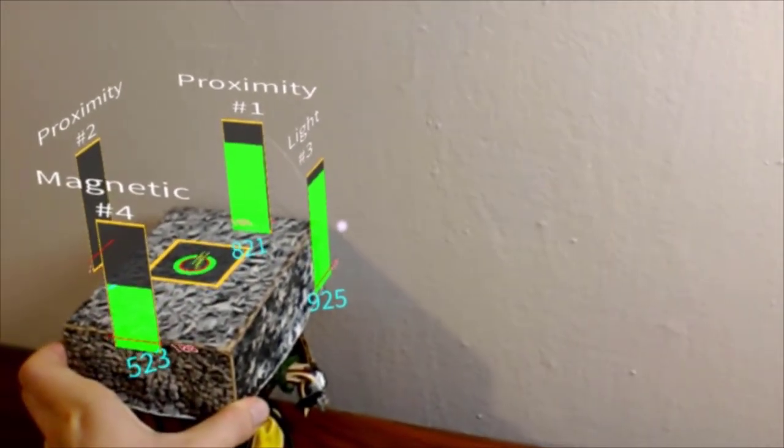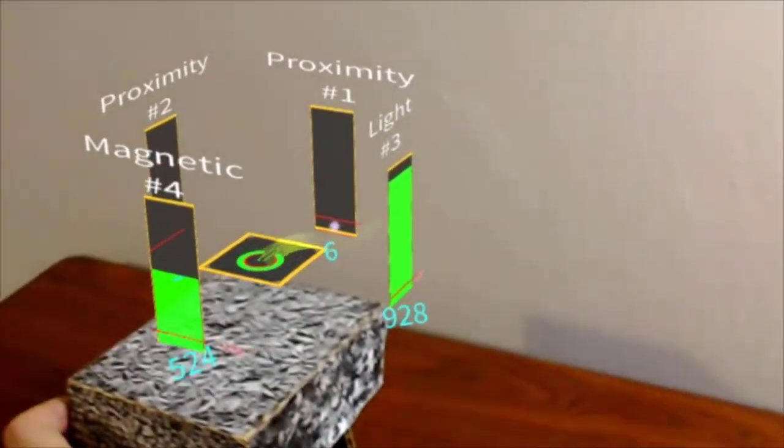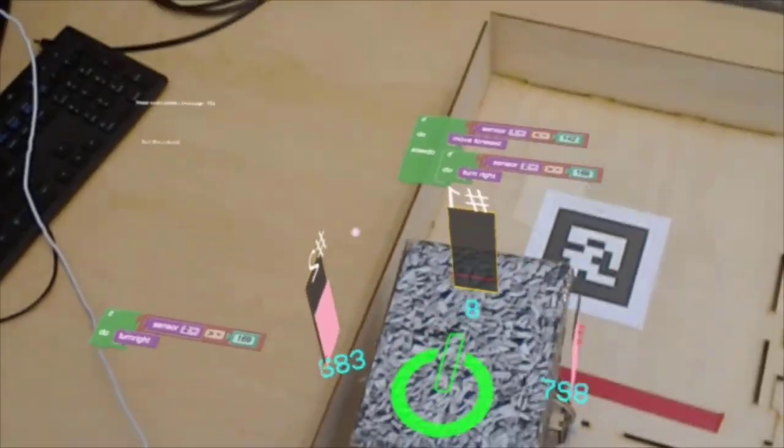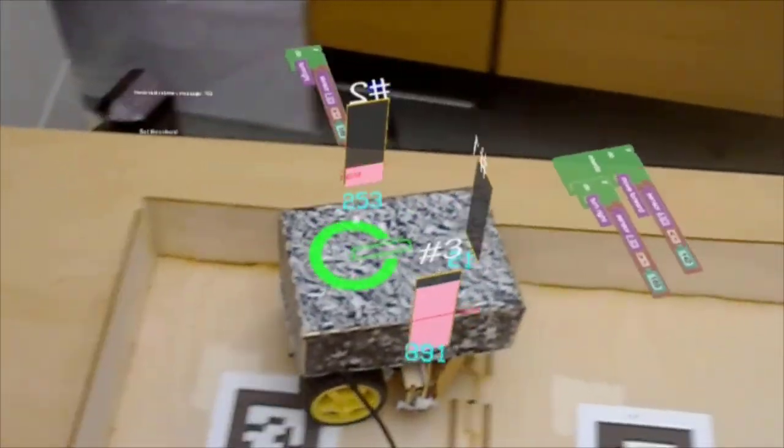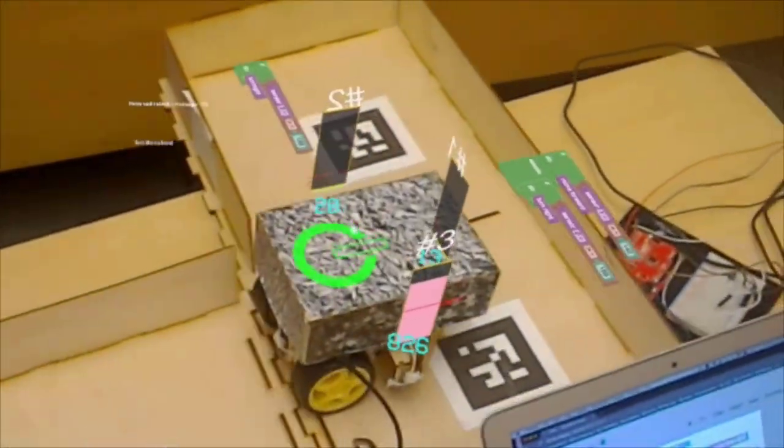Different kinds of information can be displayed through augmented reality but in this study we only showed sensor bar charts and students can use this in real time as the robot moves through a maze.